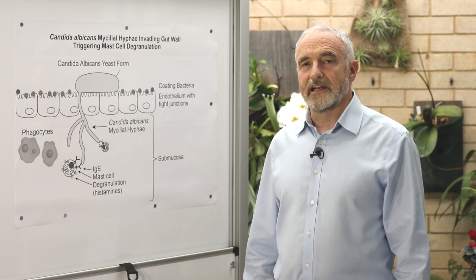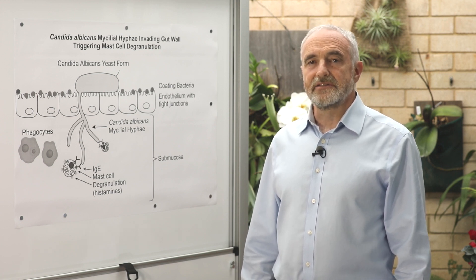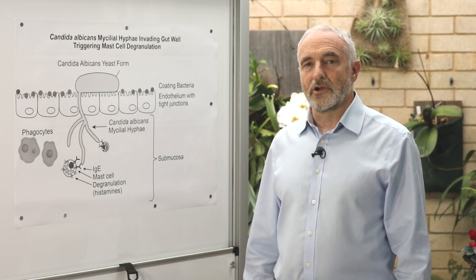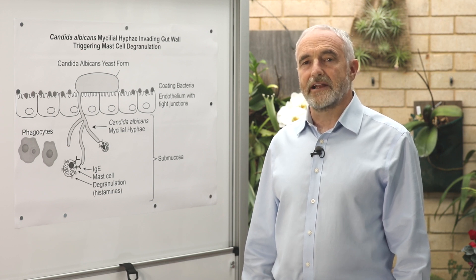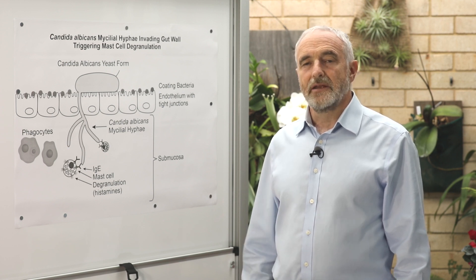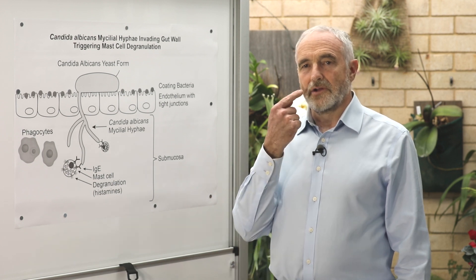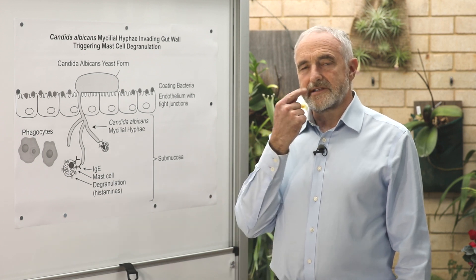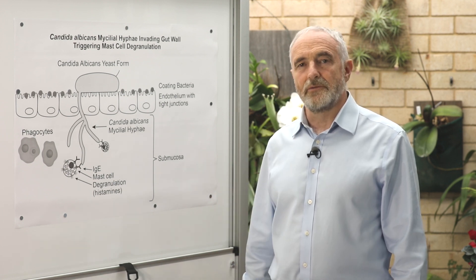Candida albicans lives within our gut primarily, but it can also live in the female vagina and it can live on your skin. You can find Candida from the tip of your tongue all the way through your bowel.